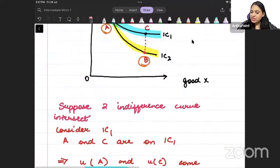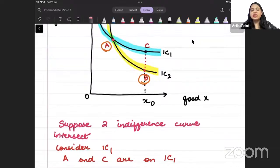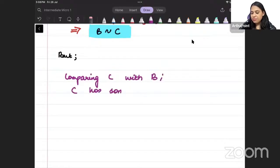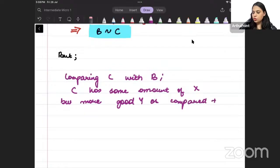But now let's see: point B and C have the same amount of good X, but point B has Y0 amount of good Y and point C has Y1 amount of good Y. So when I compare point C with B, comparing point C with B, C has the same amount of good X but more good Y as compared to B.